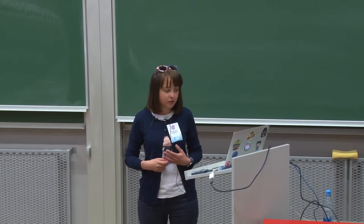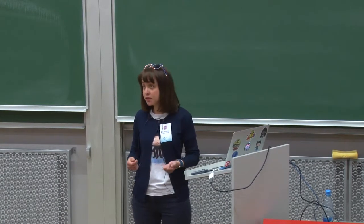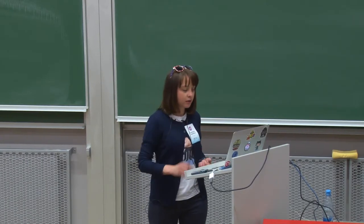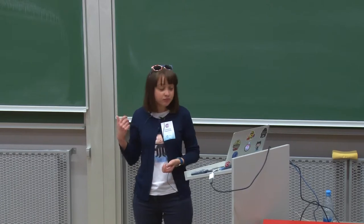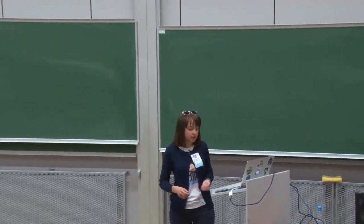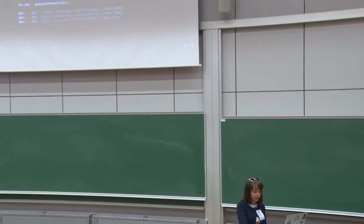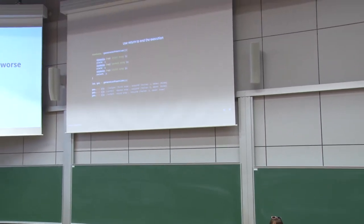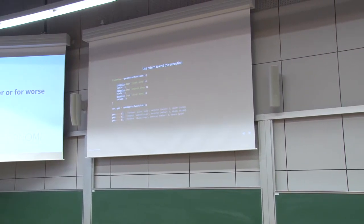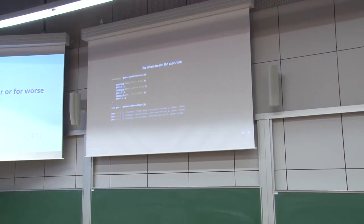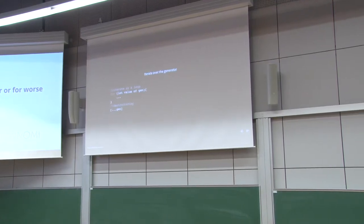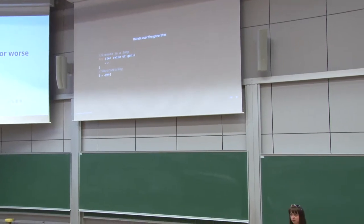Here you call next three times. When you call it for the third time, it returns an object with value of three and done still false, because we don't know whether we've reached the end. To reach the end, you call next one more time. If you don't want to do this, you can replace the last yield with a return, so you only call next three times.